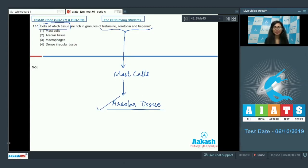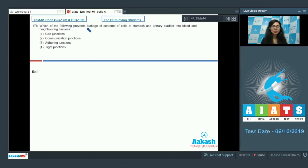Question 178: which of the following prevents leakage of contents of cells of stomach and urinary bladder into blood and neighboring tissues? Gap junctions, communication junctions, adhering junctions, or tight junctions? The question is mentioning it prevents leakage of contents, and such junctions are tight junctions, also known as zona occludens.